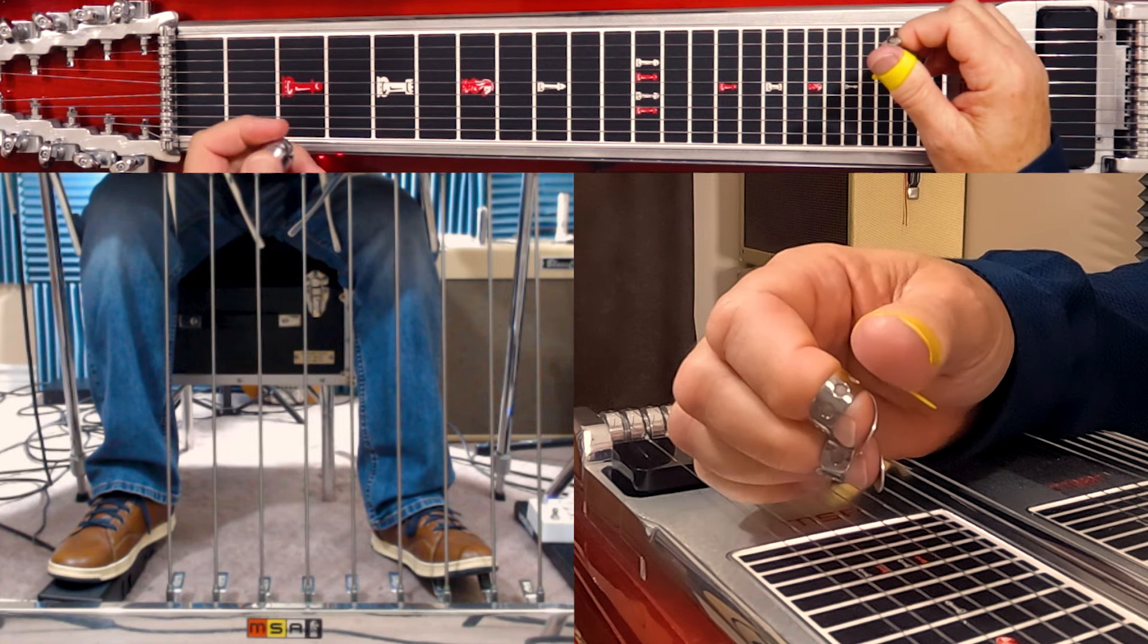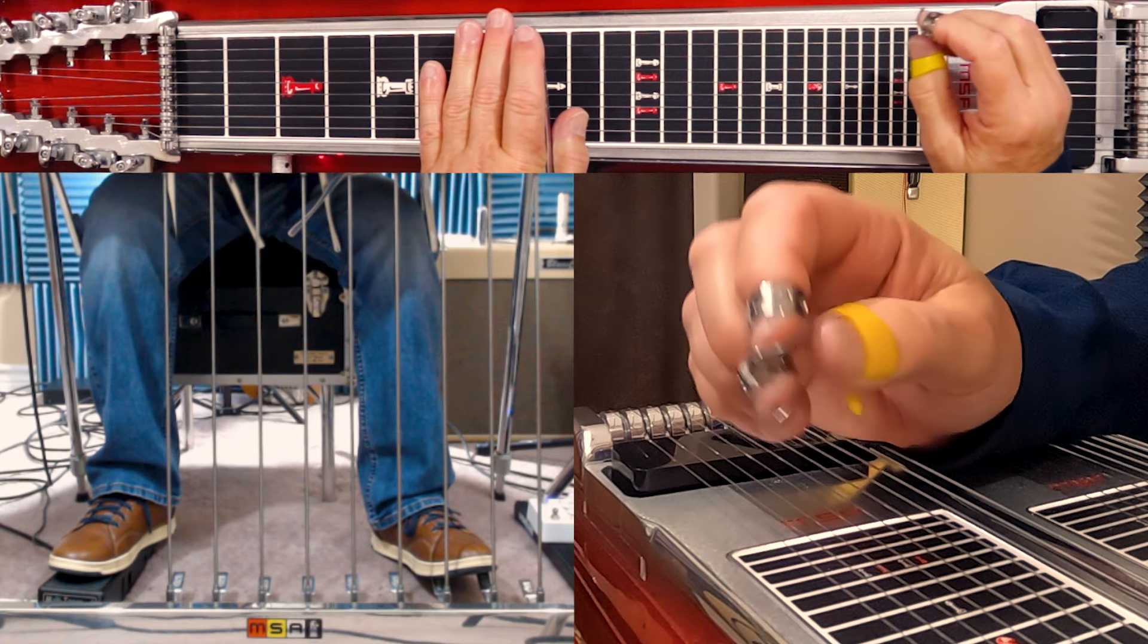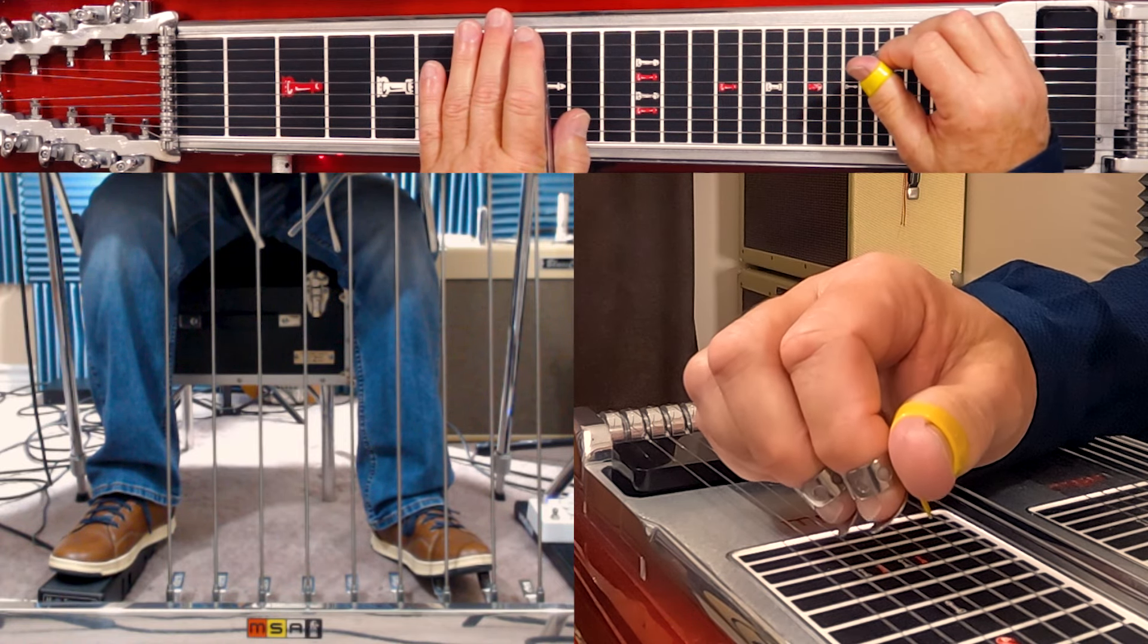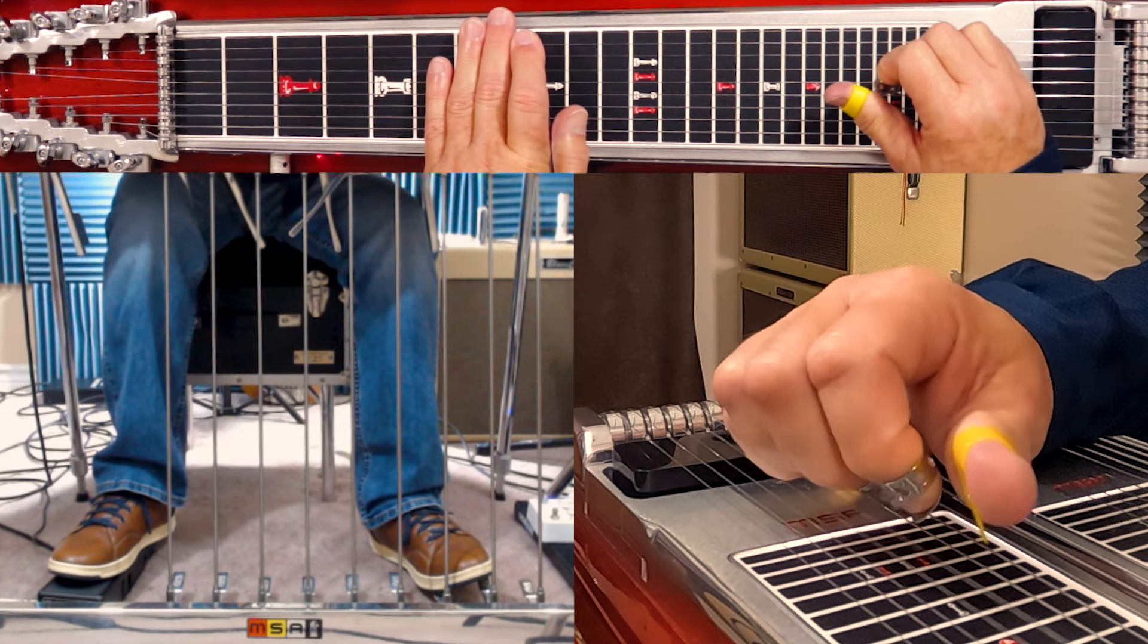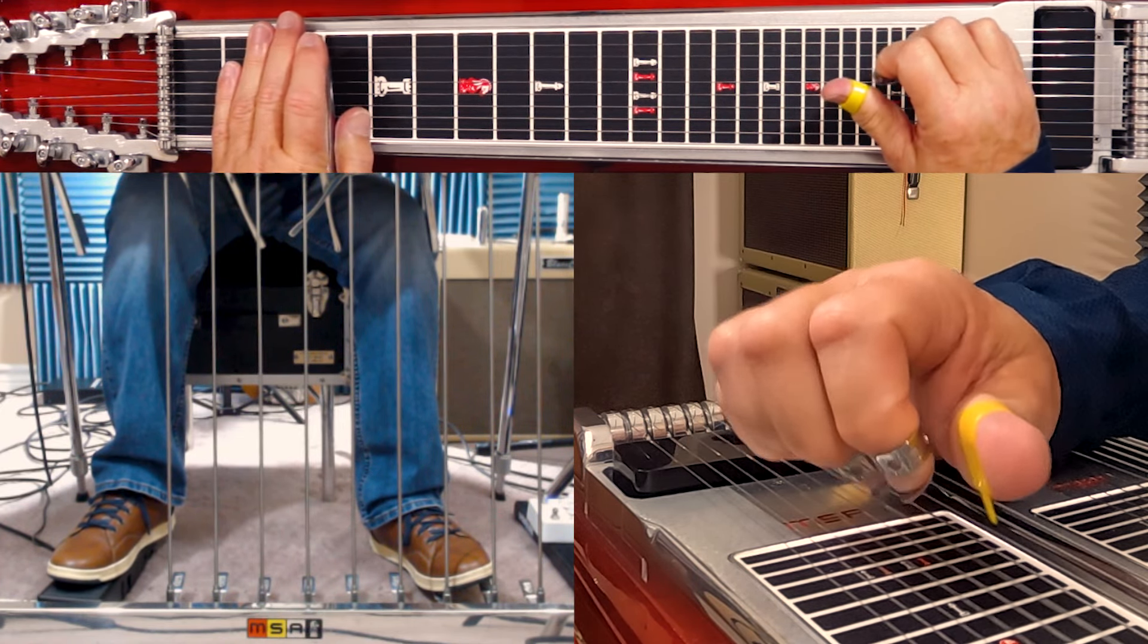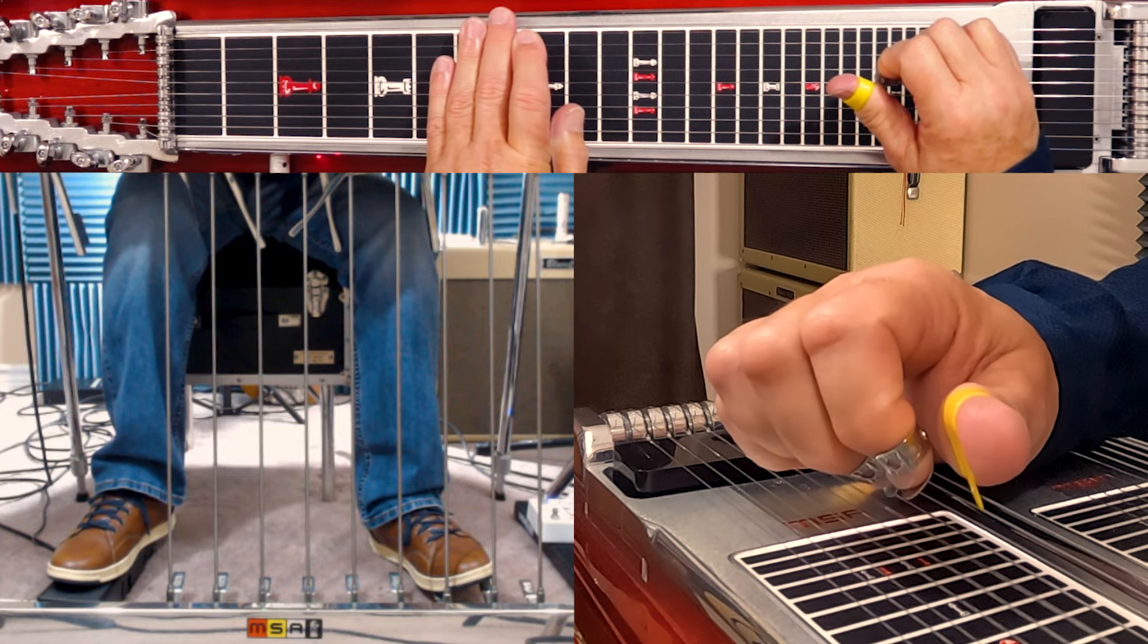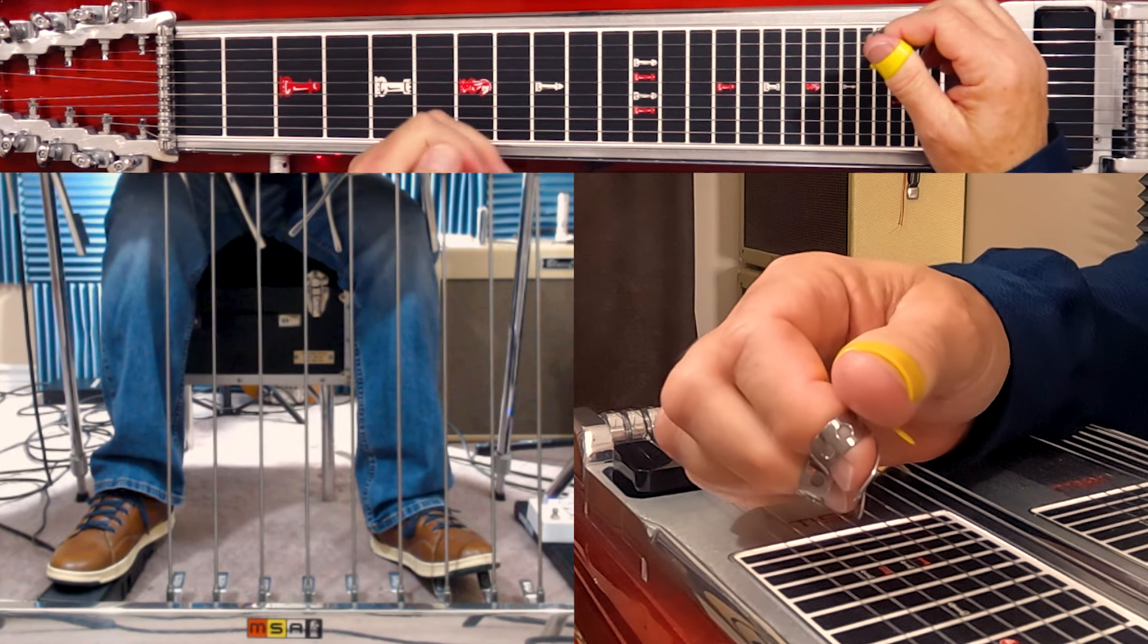The next chord in the progression is a G7. We play the same exact lick, but we move it to the eighth fret. B pedal, ED flat knee lever, three, four, five, six. Let's let all that ring. We've got our ED flat knee lever down. So we're going to do the last part.